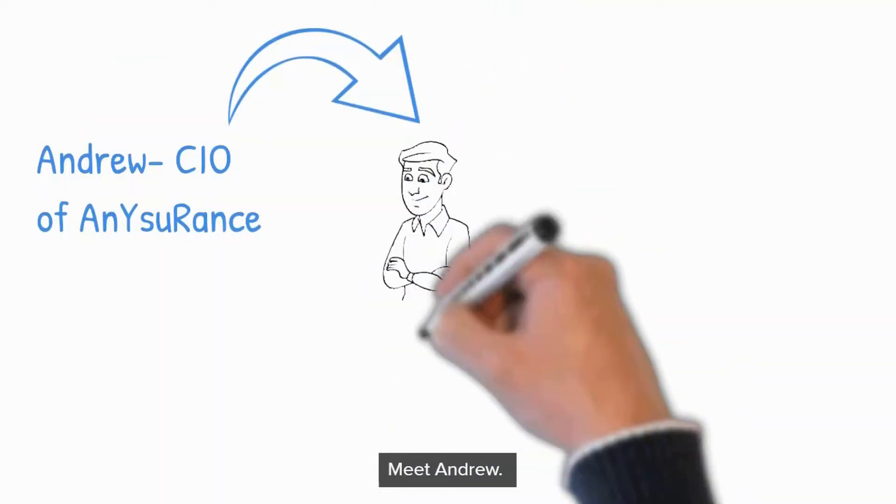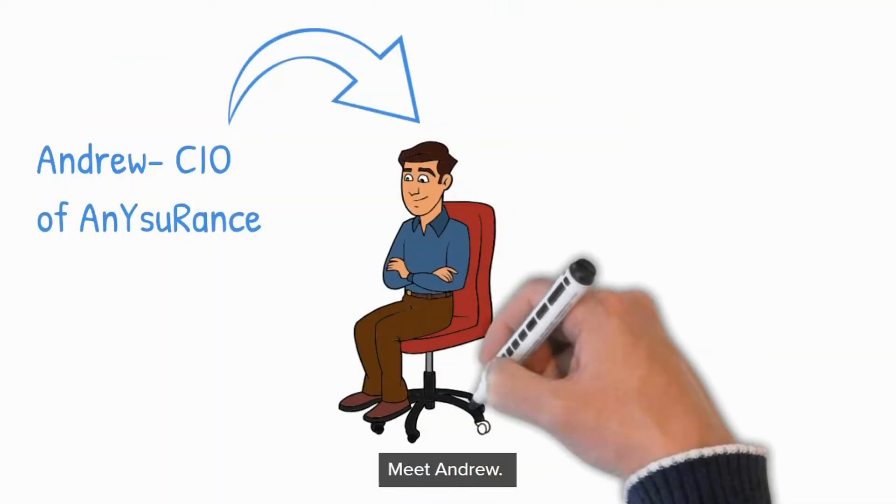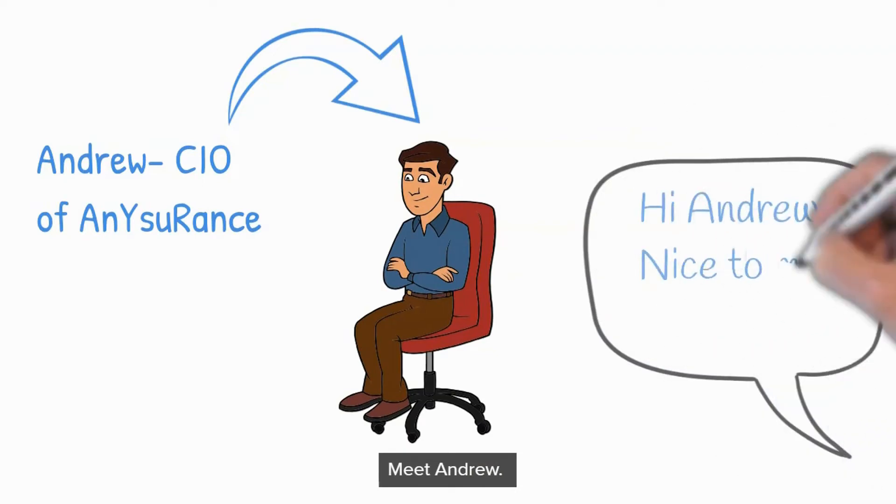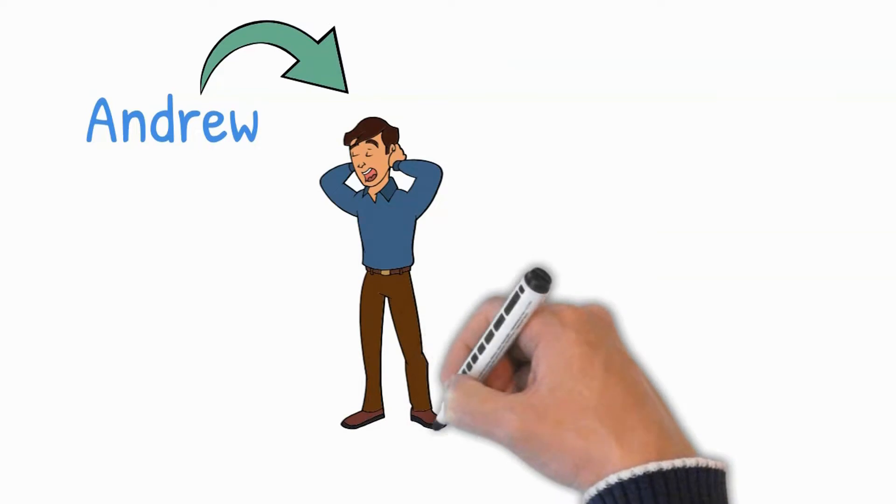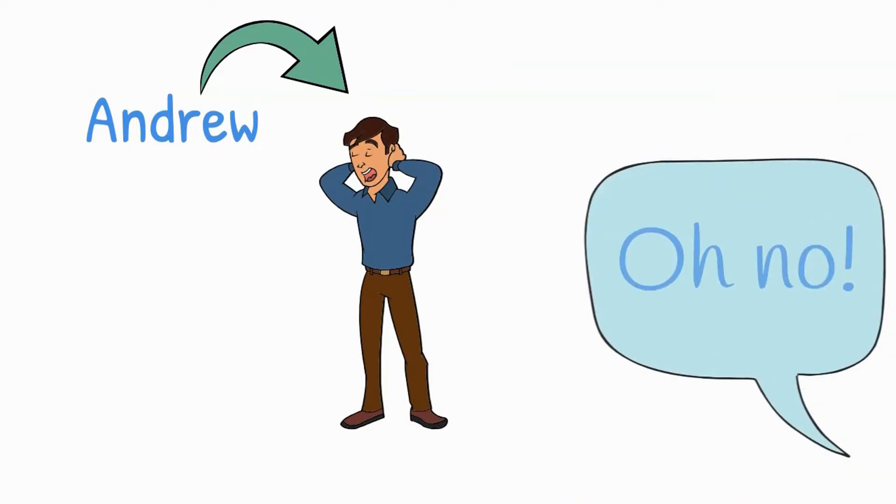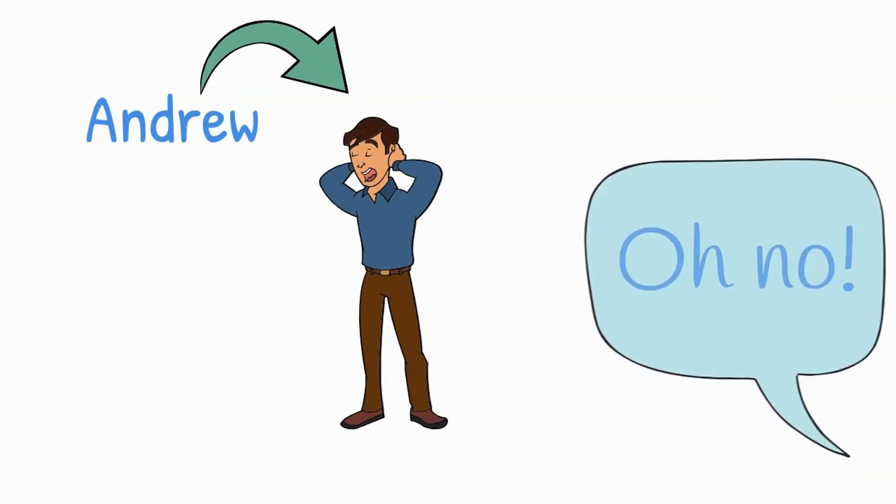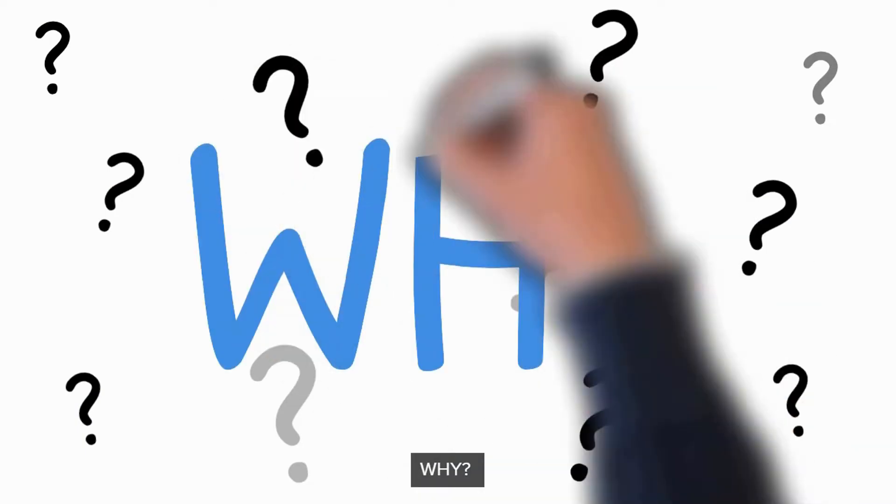Meet Andrew, the Chief Information Officer of the Any Insurance company. He has recently joined the company and has observed that there are a lot of problems that need to be resolved immediately, otherwise there will be heavy business impact.